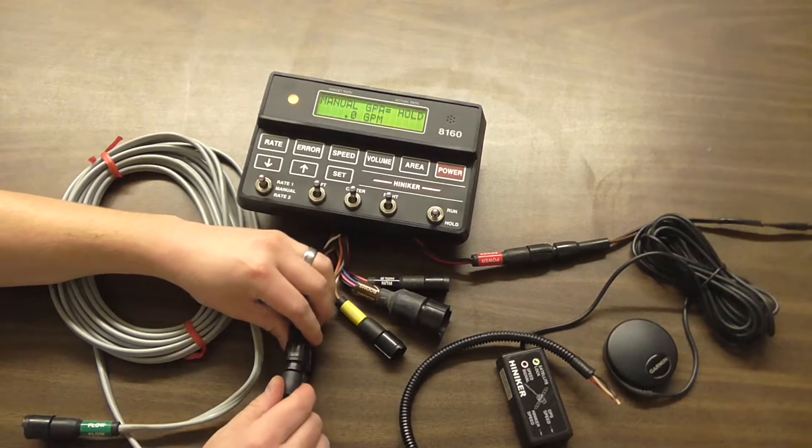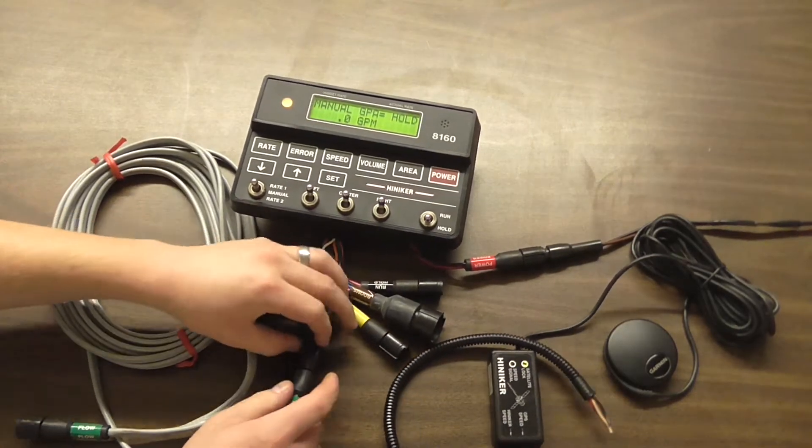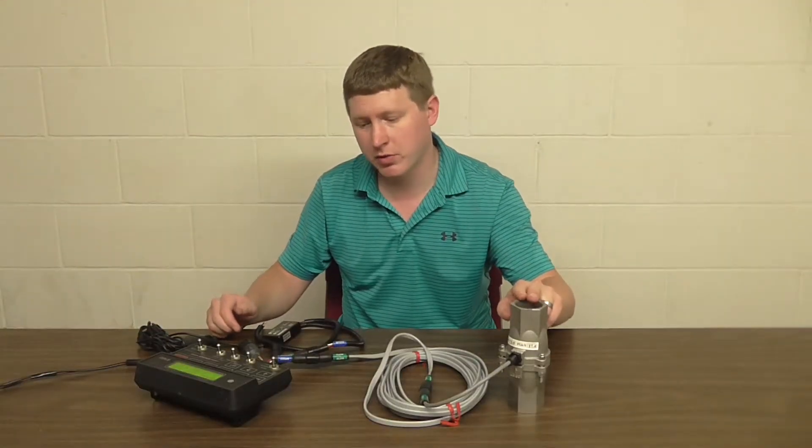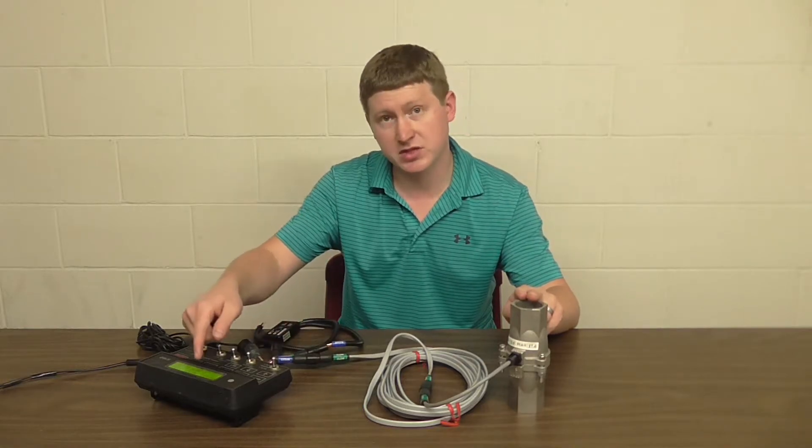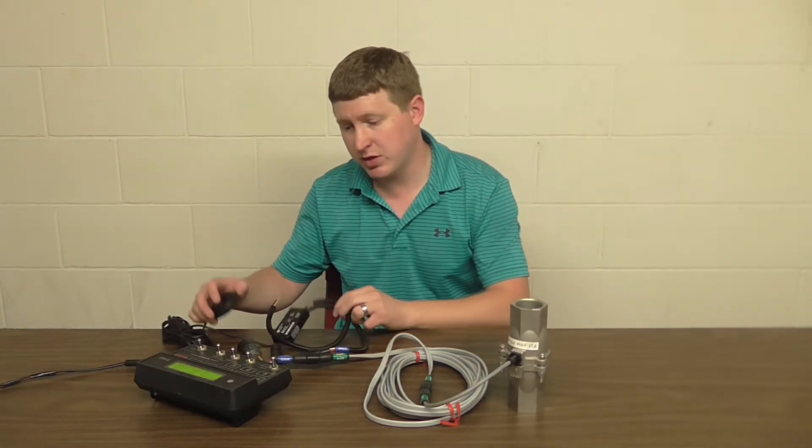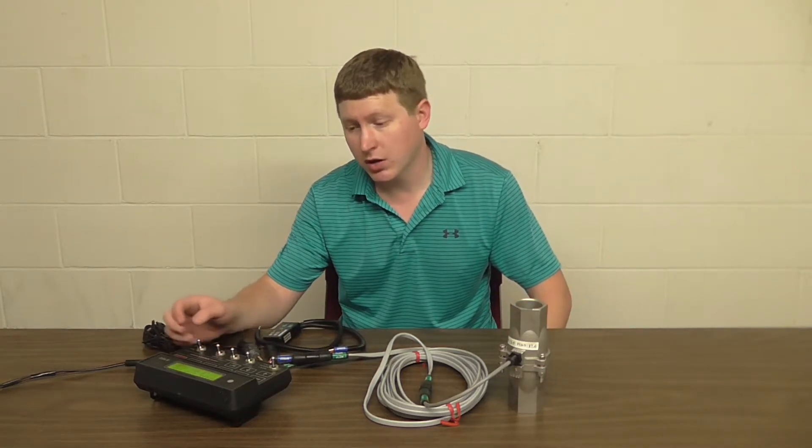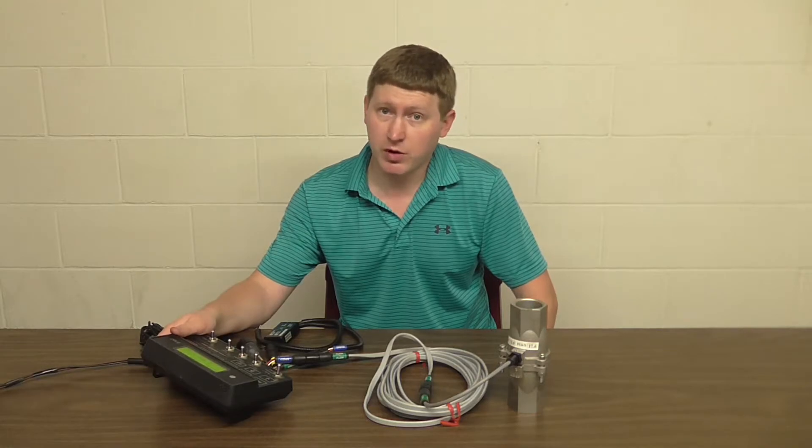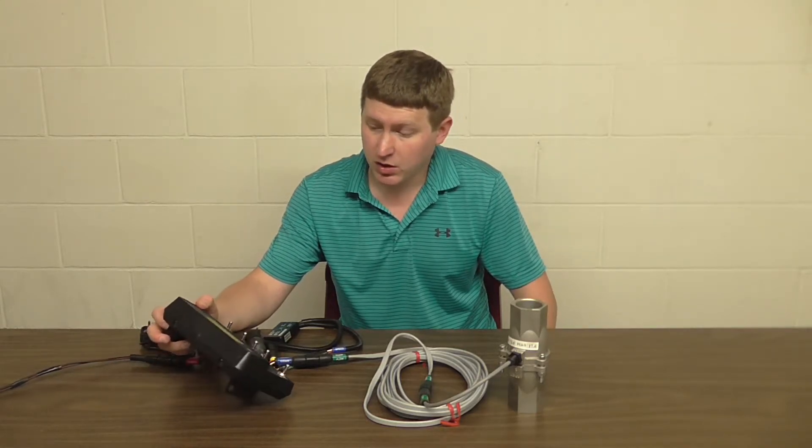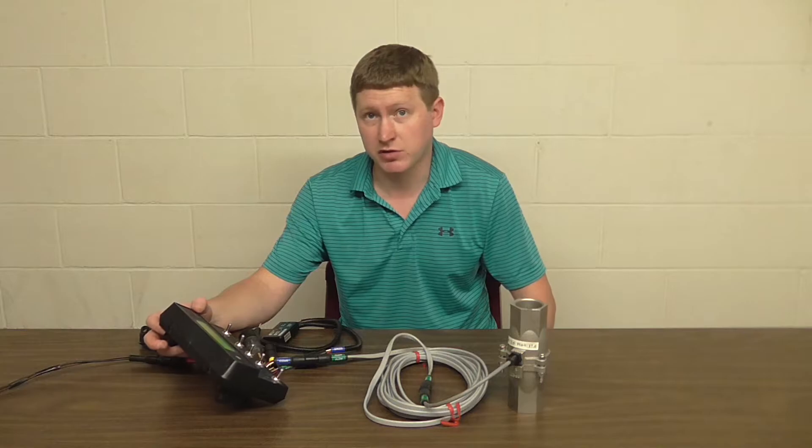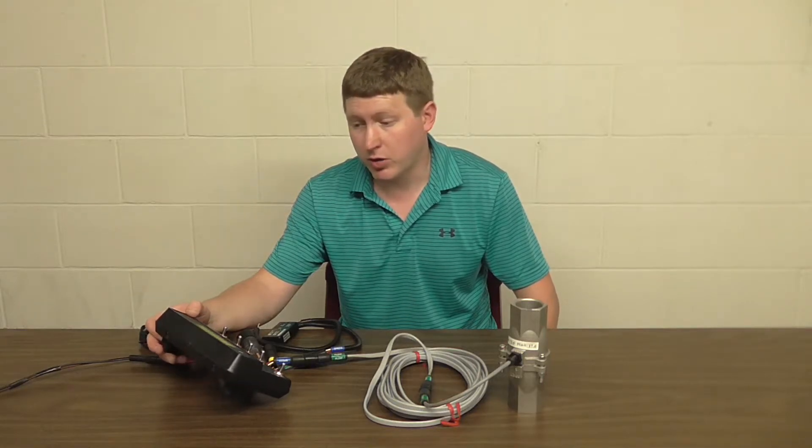Now what this test will do is see if the signal from the flow meter goes into the speed port and gives us a speed, or if the signal from the speed sensor comes into the flow input and gives us a flow. So you can even do this while you're running in the field, and preferably you want to do this when you have something actually flowing through your toolbar.